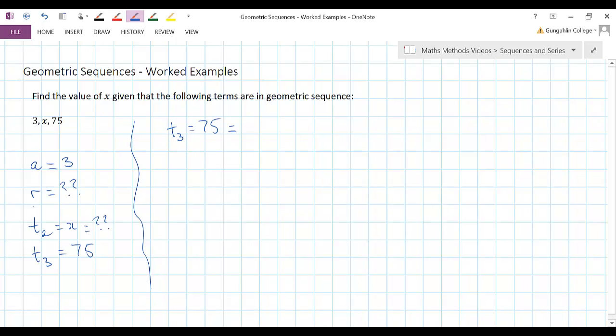One way that I could do it if I knew what the common ratio was, was to multiply along the sequence. So the third term we know from the nth term of a geometric sequence has to be a times r squared.